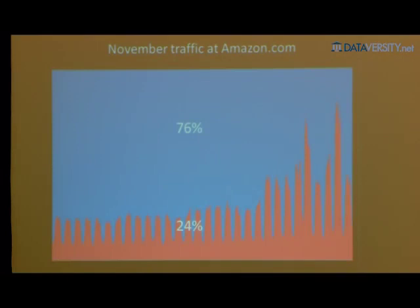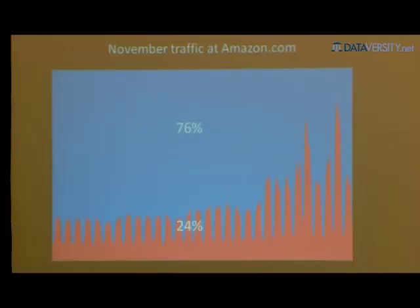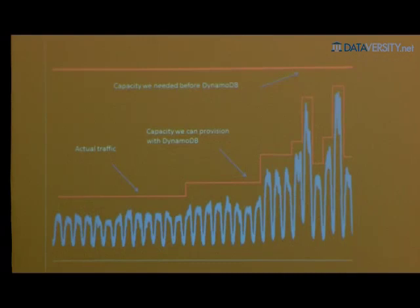Take a look at an example of Amazon.com traffic in November — that's where Black Friday happens right after Thanksgiving. You get this spike in demand needed for database capacity. When you aggregate all usage per day, we're only using 24% of the capacity we've had. This gives an example of pre-DynamoDB elasticity problems. What you end up doing is over-provisioning — provisioning a little above peak. With DynamoDB, you can provision throughput and size requirements more dynamically as needed.